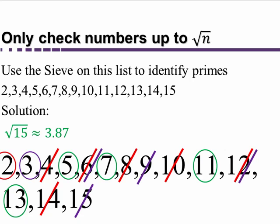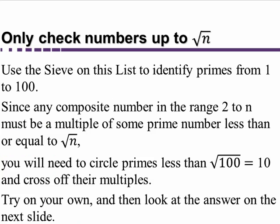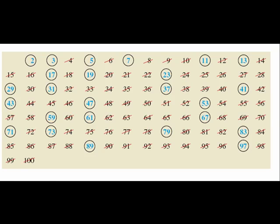If you try it out for yourself, you'll see that if you look at the list from 0 to 100, you're going to find 25 primes. You could pause the video now, write out the numbers from 2 to 100, and try it to see if you get the right answer. Here is a picture of the solution. The most important thing to remember is the square root of n.